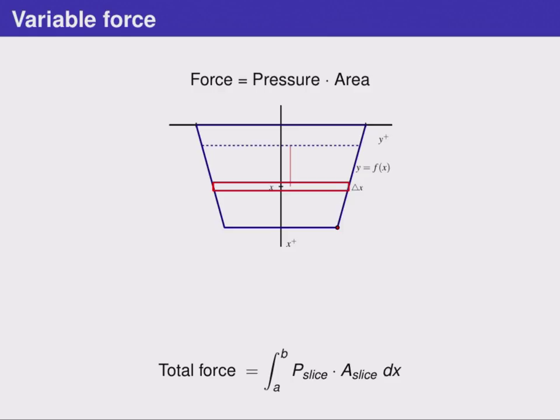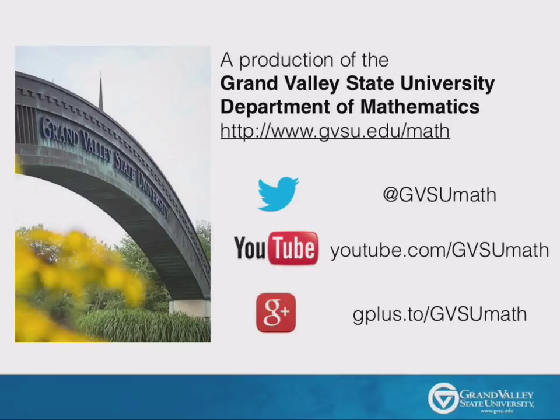In addition, the area of this slice is something that depends on how deep below the water we are. Using this, we can calculate the force on a slice to be the pressure on that slice times the area of that slice. And again, adding all of them up with an integral, we get the result that the total force exerted by the water on the dam is the integral from a to b of the pressure of a slice times the area of the slice. Now that we've seen these definitions, let's take a look at some of these in action.